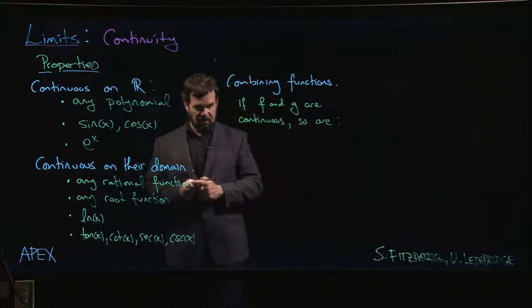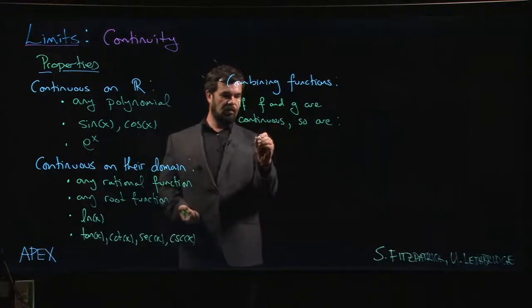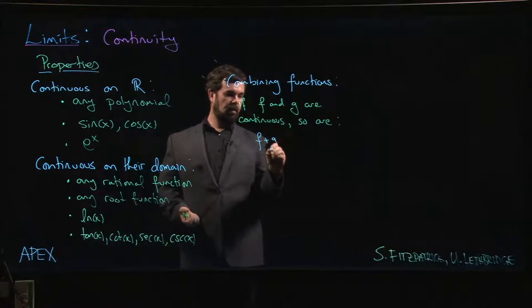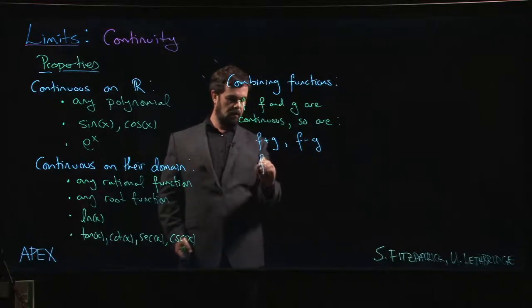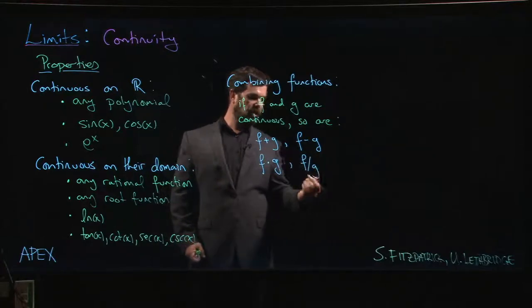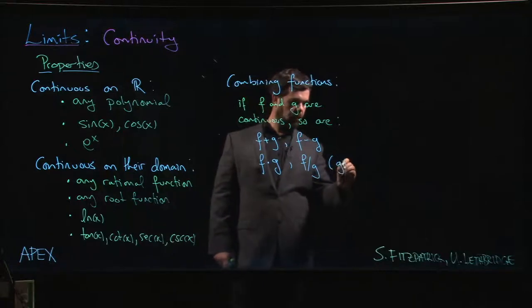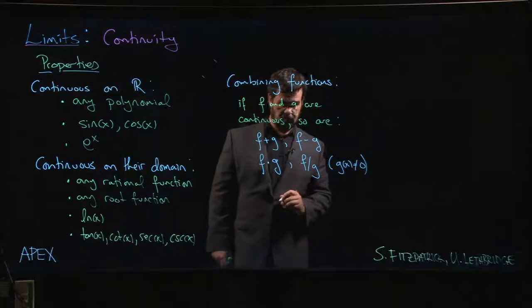f and g are continuous, so will be f plus g, f minus g, f times g, f divided by g, as long as we stick to points where g of x is not equal to zero.